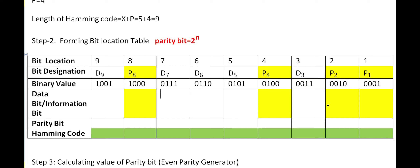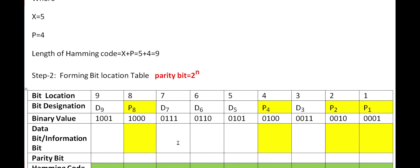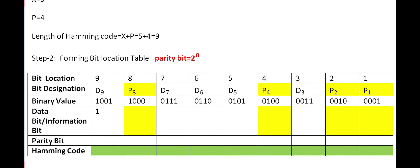Together, the data bits and parity bits form the hamming code. The data word is 11110. I place these data bits into the non-parity positions: D9=1, D7=1, D6=1, D5=1, D3=0 — skipping the parity bit positions. Now I will find the parity bits.